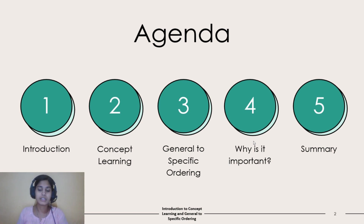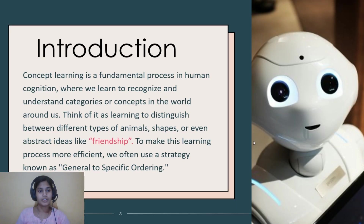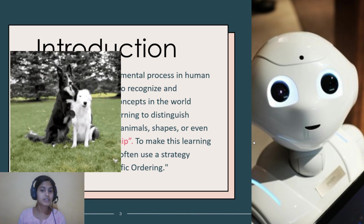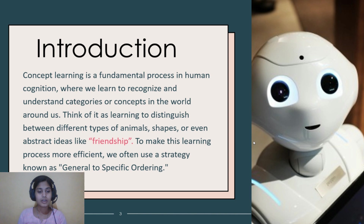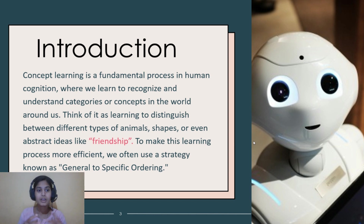Concept learning is a fundamental process in human cognition where we learn to recognize and understand categories or concepts in the world around us. Think of it as learning to distinguish between different types of animals, shapes, or even abstract ideas like friendship. To make this learning process more efficient, we often use a strategy known as general to specific ordering. Concept learning and general to specific ordering are related to each other.